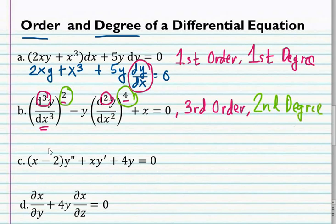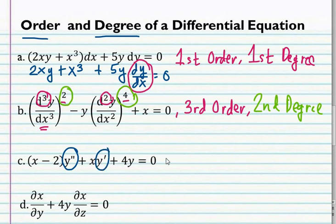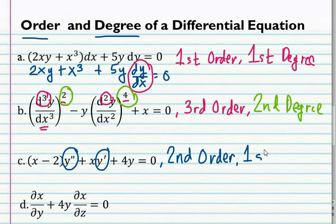Letter c: we have quantity xy, y double prime plus xy prime plus 4y is equal to 0. We have y double prime and y prime as our derivatives. We can clearly see that this is in the second order because of y double prime, and y double prime is in the first degree.